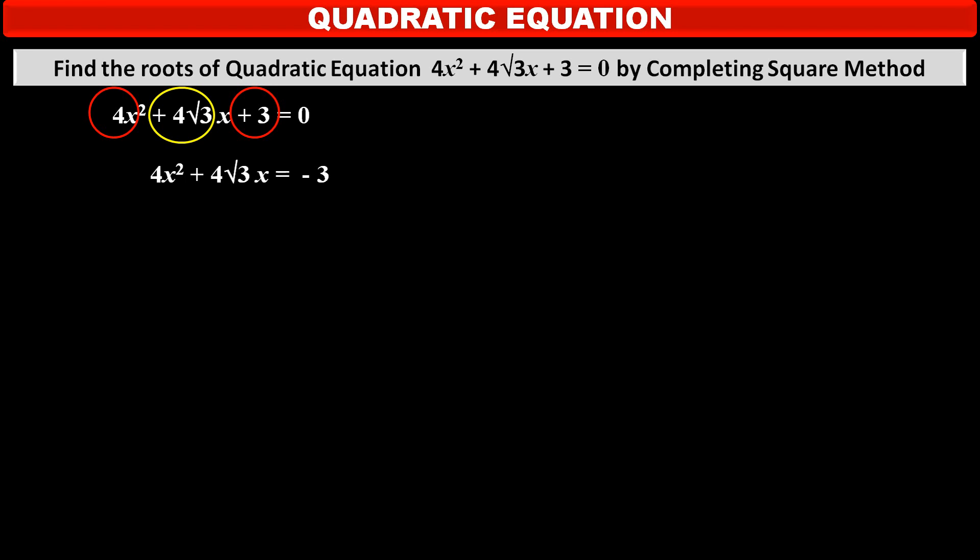To solve by completing the square method, we have to make the coefficient of x² equal to 1. So dividing both sides by 4, we get x² + √3x = −3/4.